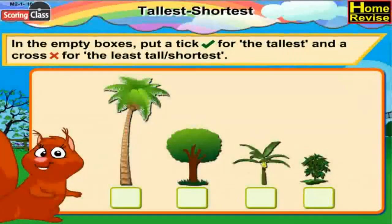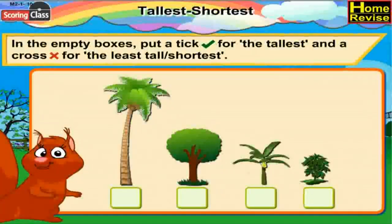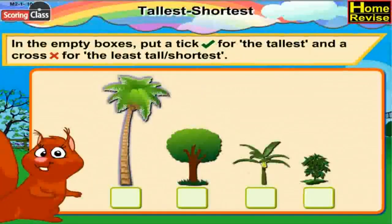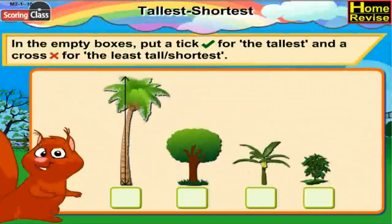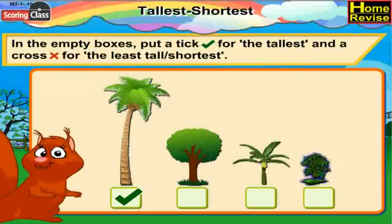Now in the empty boxes, put a tick for the tallest and a cross for the least tall or shortest. There are four kinds of trees. The first tree is the coconut tree — of course it is very tall, and in this case it is the tallest, so put a tick in the box in front of the coconut tree. And the fourth plant is the smallest or the least tall, so put a cross in the box in front of the fourth plant.